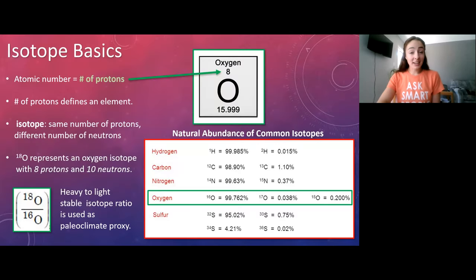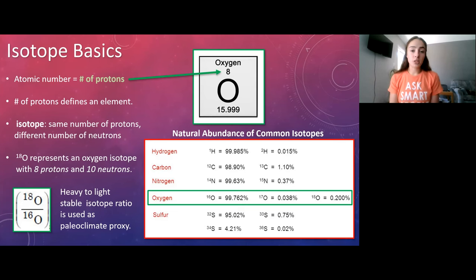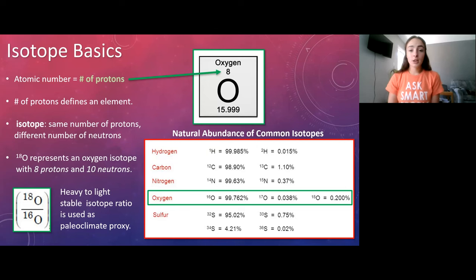Before we get into the nitty-gritty mechanisms that oxygen isotopes undergo in the physical environment, we're going to start with some isotopic basics. If you don't remember from the Absolute Dating episode, isotopes are an atom of the same number of protons but a different number of neutrons.